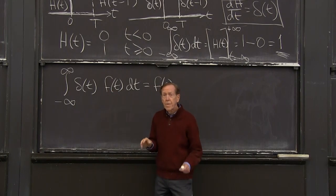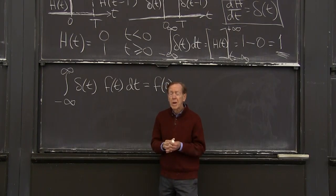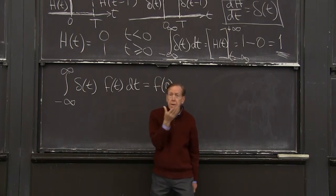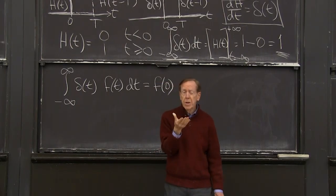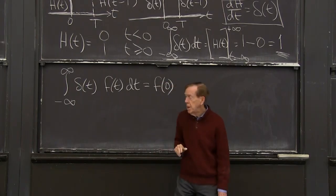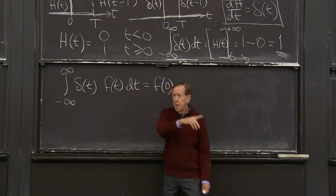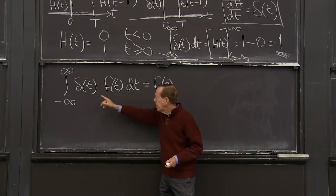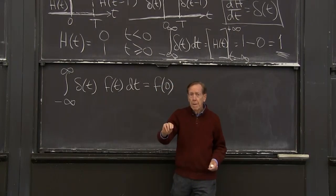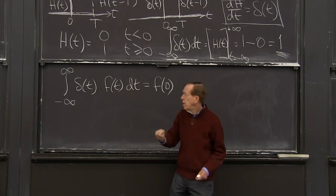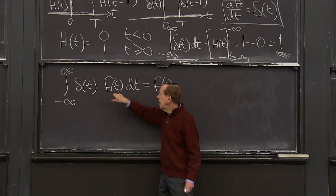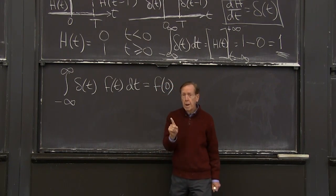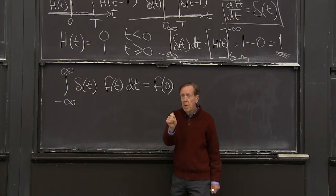So the integral of delta of t sine t is sine of 0 is 0. One term turned on, but the other term turned off. So nothing happened altogether. Whereas the integral of delta t e to the t, yeah, tell me that one. The integral of delta t e to the t dt is, well, e to the t is doing all sorts of stuff for all time. But the delta function is 0 all that time, except that t equals 0.